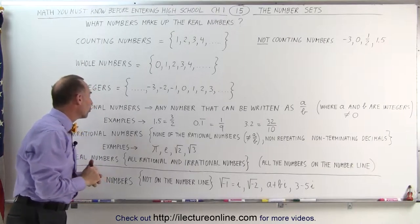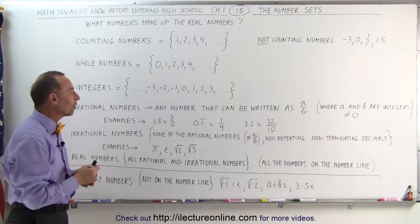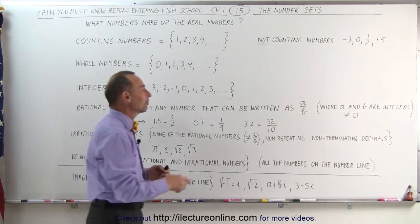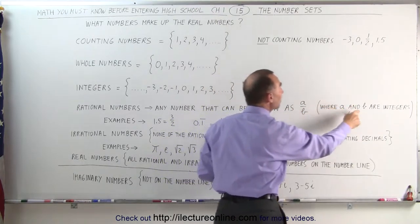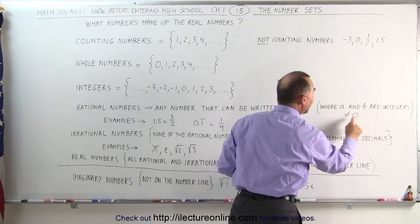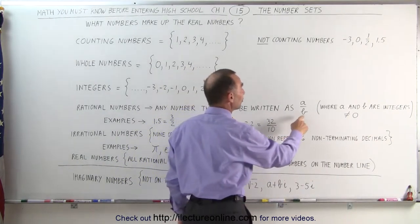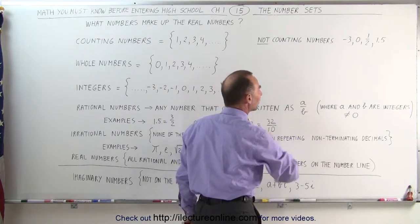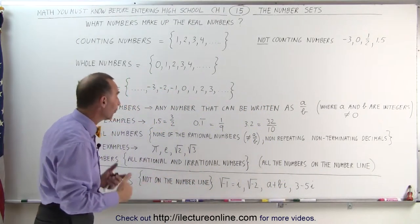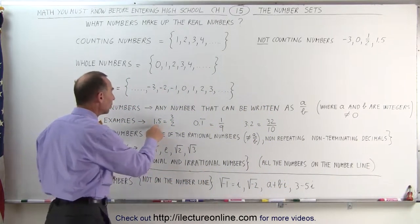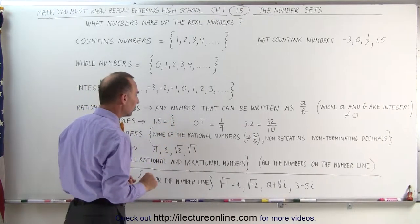The next set is what we call the rational numbers. The way you can tell that you have a rational number is if you can write it in the form of a fraction. Any number that can be written as A over B, as long as A and B are integers and B is not equal to 0 — the reason why B can't equal 0 is because you cannot divide by 0, that is an undefined number. So any number you can write as A over B. For example, 1.5 can be written as 3/2 — that's a fraction, therefore this is a rational number.